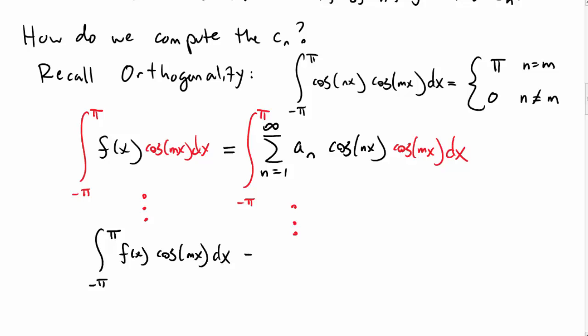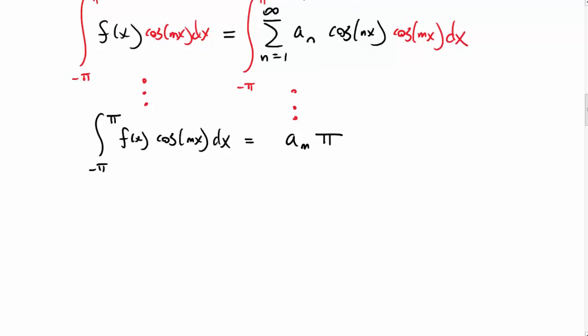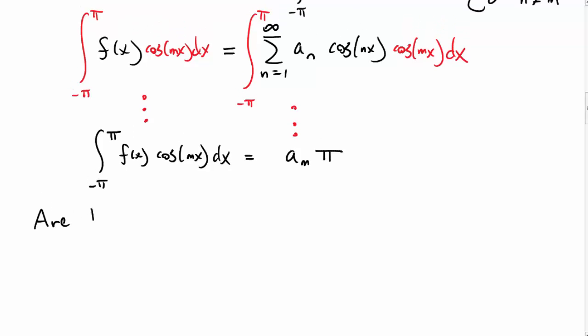and the right-hand side was just a_m times π, which allowed us to solve for the a_m, the coefficients. So, is there something similar we can do for the complex exponentials? Are the e^(inx) orthogonal?